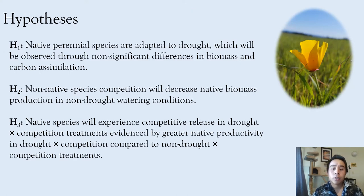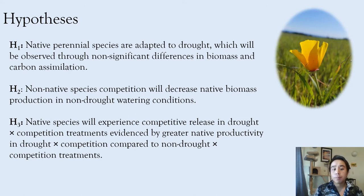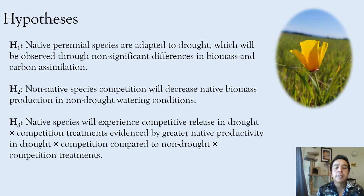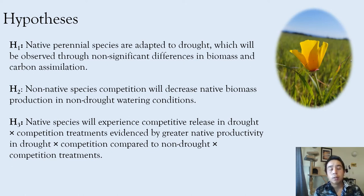Because one of my previous field studies showed that native species had greater cover in drought compared to ambient rainfall plots, and non-native species had lower cover, I was really interested in exploring potential competitive release dynamics with native and non-native species in terms of drought. I propose hypotheses such as: native perennial species are adapted to drought, observed through non-significant differences in biomass and carbon assimilation; non-native species competition will decrease native biomass production in non-drought watering conditions; and native species will experience competitive release in drought and competition treatments, evidenced by greater native productivity in drought and competition compared to non-drought competition treatments. Today, because this is a short talk, I will only be going over most of the morphological measurements and traits and won't be talking much about the physiological measurements.